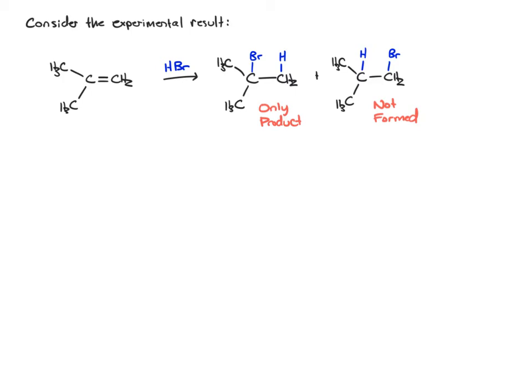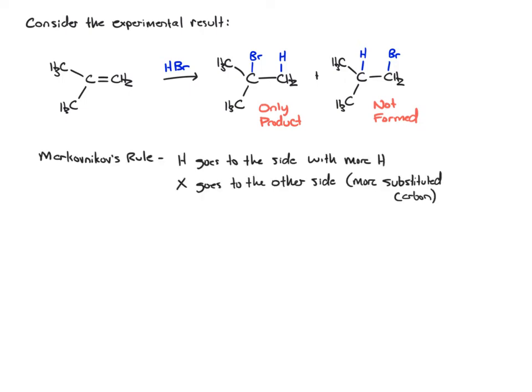We want to figure out why this is. The chemist to study this very thoroughly was known as Markovnikov. He came up with what's now known as Markovnikov's rule, which simply states the hydrogen goes to the side where there's more hydrogen. The halogen goes to the other side, the more substituted carbon. If you look at the starting material and compare the two carbons of the double bond, the carbon on the left has zero hydrogen attached. The carbon on the right has two hydrogen. This carbon on the left is the more substituted carbon of the double bond. Based on Markovnikov's rule, the hydrogen goes to the side where there's more hydrogen, and that's what we see in the product.